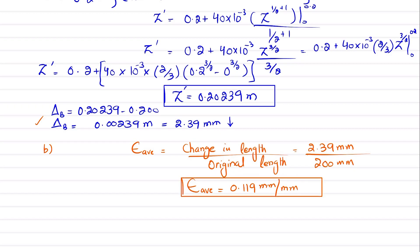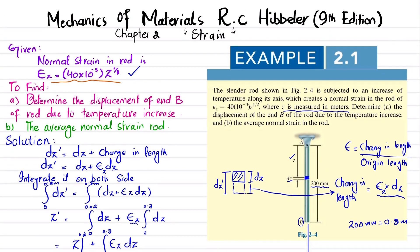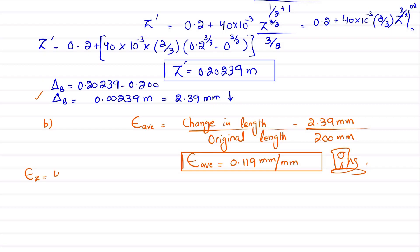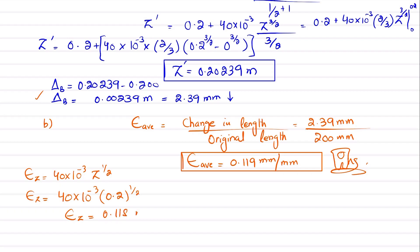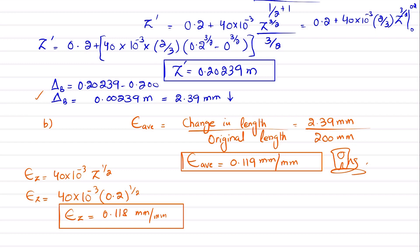For verification, using the original strain equation epsilon_z = 40×10⁻³ × z^(1/2) and substituting z = 0.2 m: epsilon_z = 40×10⁻³ × (0.2)^(1/2) = 0.0179 mm/mm at the end of the rod. The average value of 0.0119 and the point value of 0.0179 are in a reasonable range relative to each other, confirming our solution.